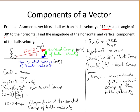So the answers we have here are the magnitudes of the horizontal and vertical components of the ball's velocity. They are not the actual vectors representing the horizontal and vertical components, as we did not give the direction — we only gave the magnitude.